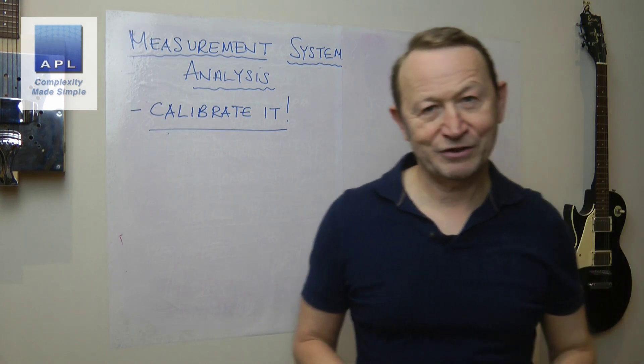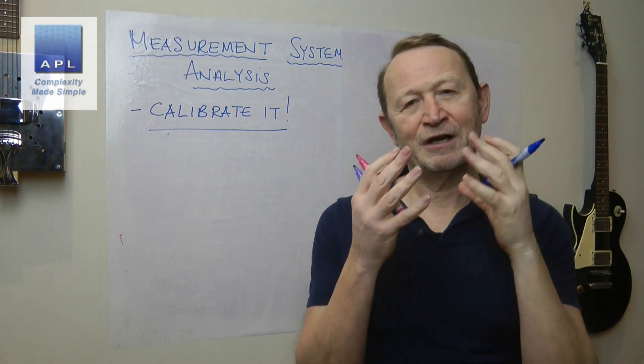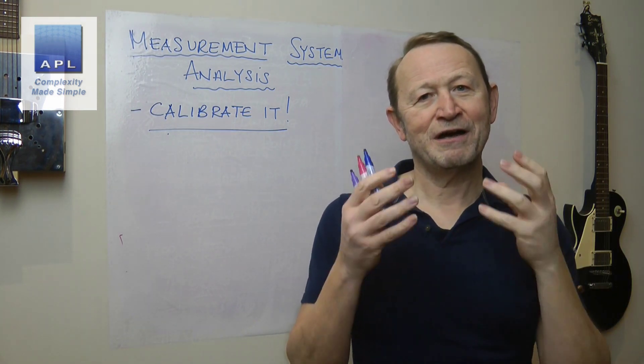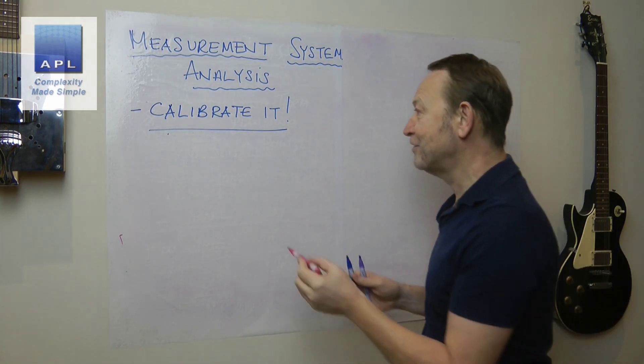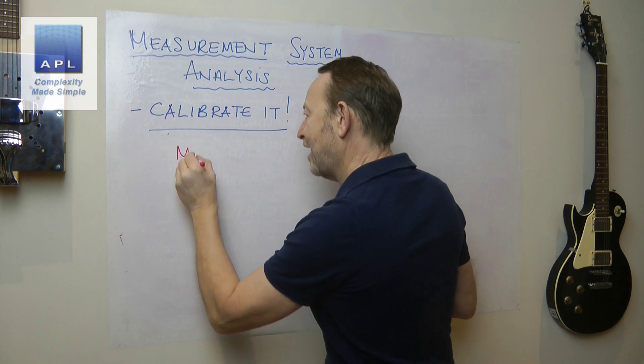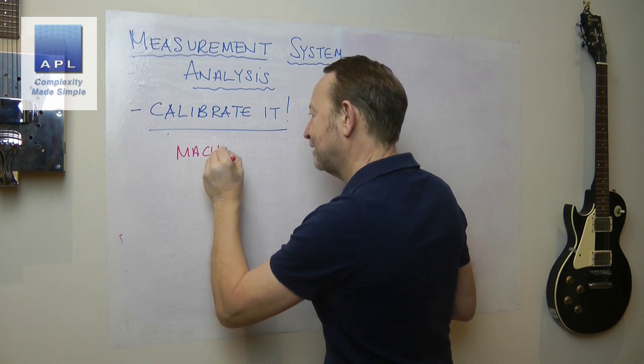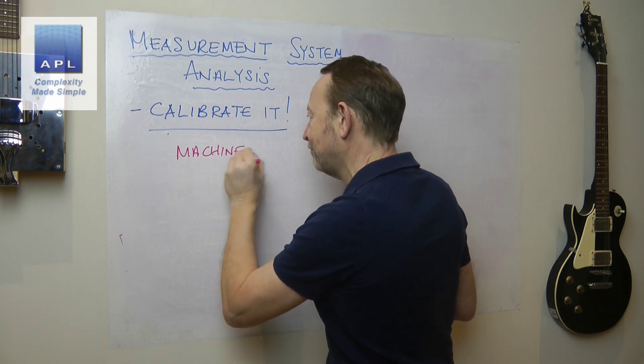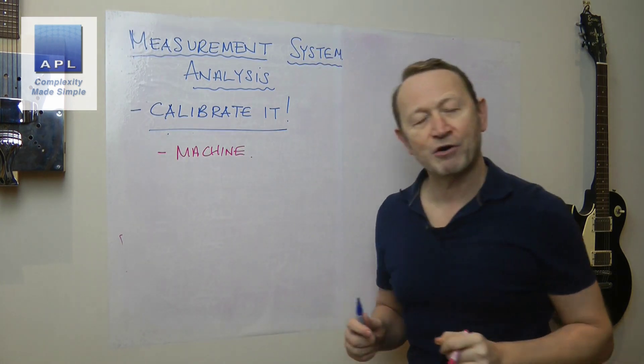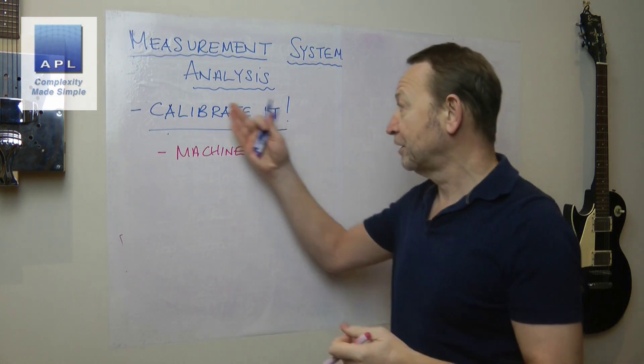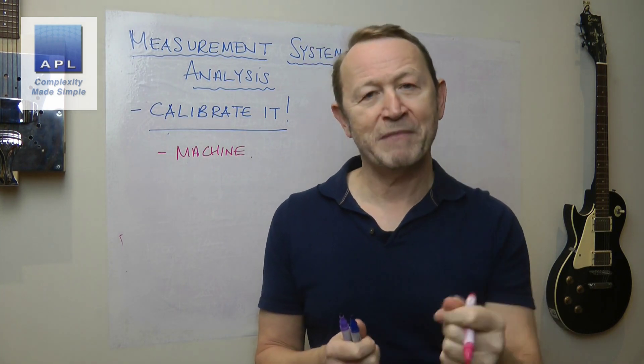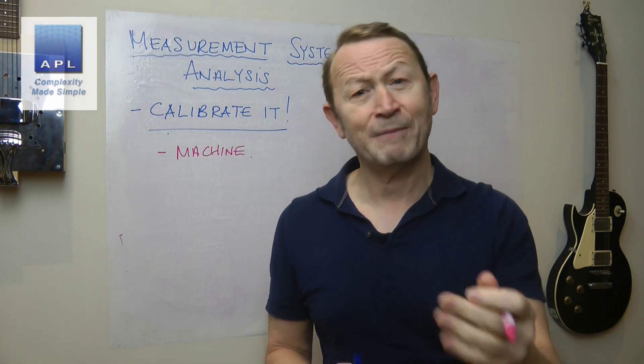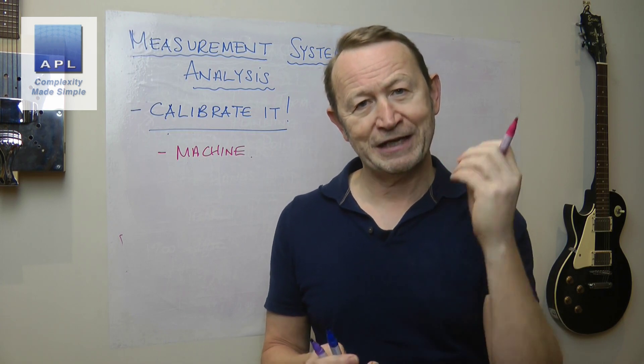I know you think every measurement system you have isn't wrong because you calibrated. I'm afraid calibration only deals with one of the variables in the system, and that is the machine, the piece of equipment that you've chosen to use. Now don't get me wrong, should you calibrate? Yes, of course you should. Does it mean that your measurement system works? Absolutely not.